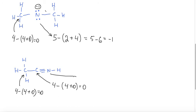Let's do this nitrogen. It's in group 5, so it has 5 valence electrons. How many bonds does it have? It has 3 bonds to the left and 1 bond to the right — that makes 4 bonds. Does it have any lone electrons around it? No, it does not — 0. 5 minus 4 is equal to plus 1, and we will put this charge on the nitrogen.